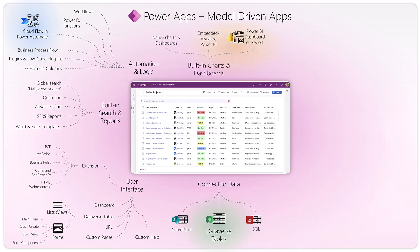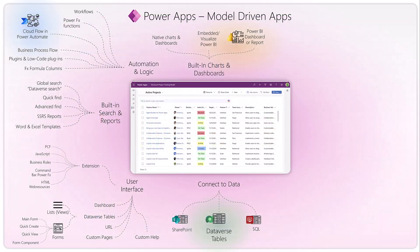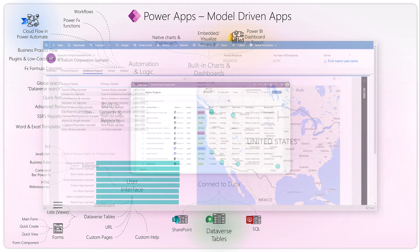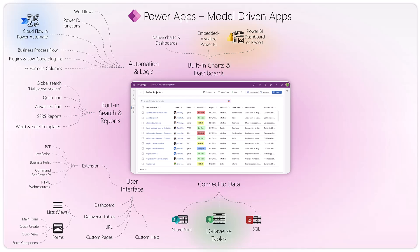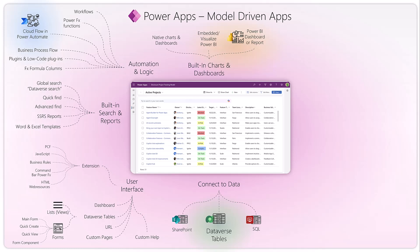Let's look at built-in chart and dashboard capabilities. You can use native charts and dashboards — there are beautiful charts you can quickly create based on the data in your Dataverse. The second option is Power BI, which integrates well with Power Apps — you can have an embedded Power BI visual within a record. The third option is to have complete Power BI dashboards or reports available as dashboards in your Power App.